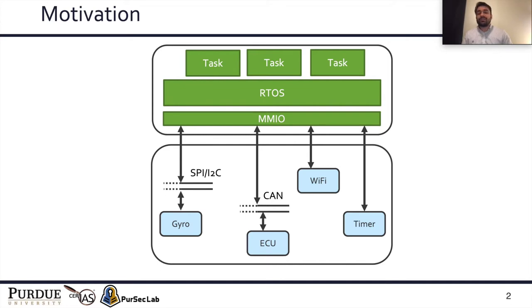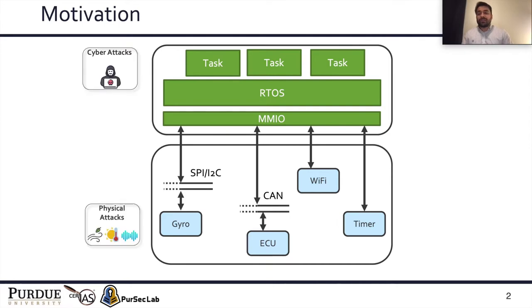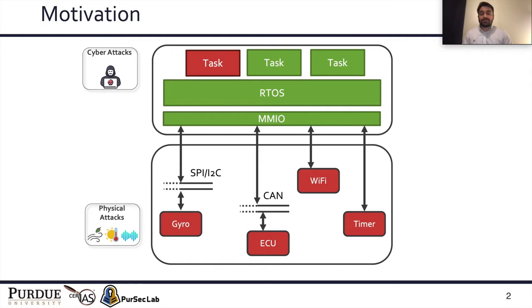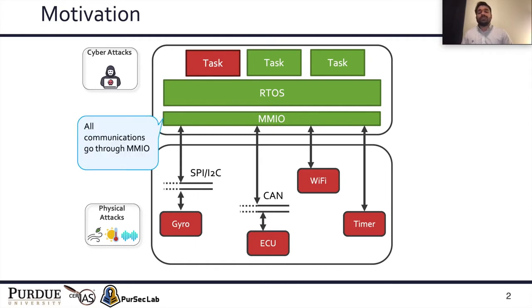Unlike traditional systems, in a UV system there can be multiple vectors of threats. There could be cyber attacks, there could be physical attacks, and because of this there could be multiple malicious agents in the system. We notice that all of the communication in these systems must go through MMIO.